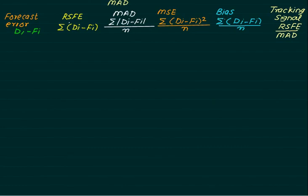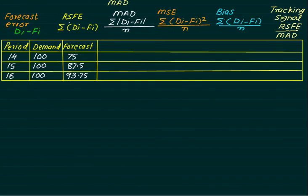We'll take one sample numerical based on this. Let's say we have three period data: periods 14, 15, 16, demand is constant at 100. The forecasts are 75, 87.5, and 93.75. Let's calculate all these parameters.